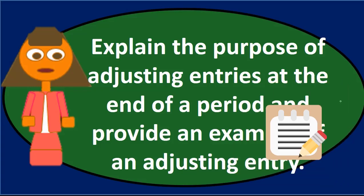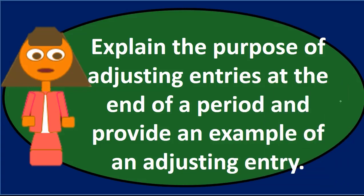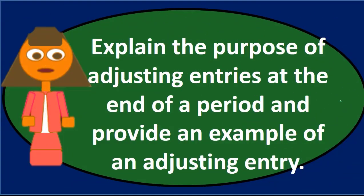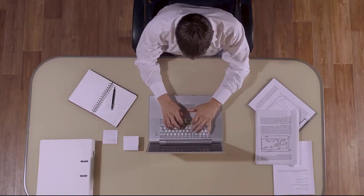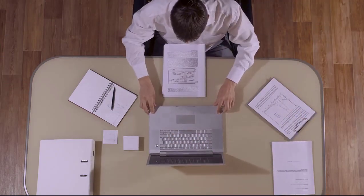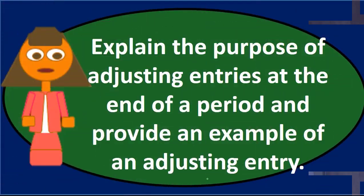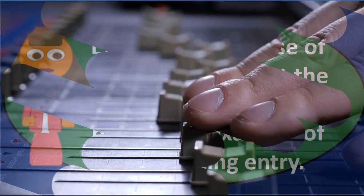We typically think of this as taking the unadjusted trial balance from the end of the time period and putting it into our worksheet, then making adjustments to produce the adjusted trial balance. Why do we need to do that? Many people think the purpose of adjusting entries is just to correct errors, but that's not necessarily true. The adjusting process is not primarily to correct errors, although we may find errors during that process.